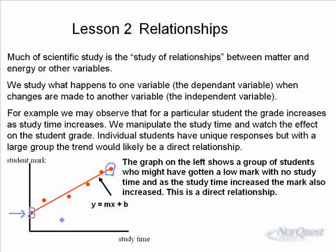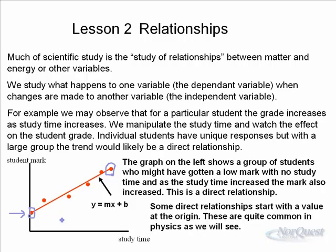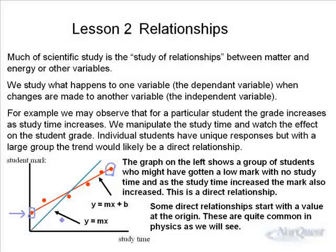The y-intercept doesn't have anything to do with the experiment itself — it's the starting point. At zero study time, the student is still capable of getting a certain mark. With some relationships, the graph starts at zero because with zero input there is zero response. In some courses you might get a zero had you not had any knowledge of the concept at all. So the formula for this relationship would be y = mx, because there is no value of b. You'll see these mathematical relationships in a lot of your physics equations as well.